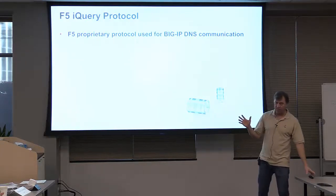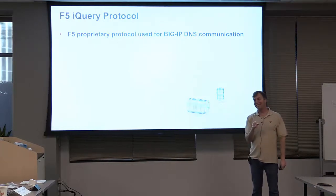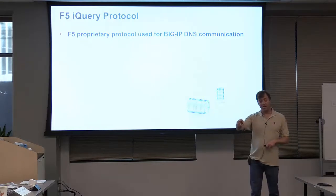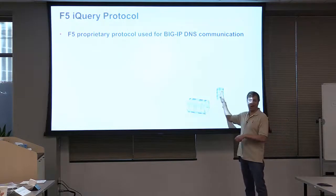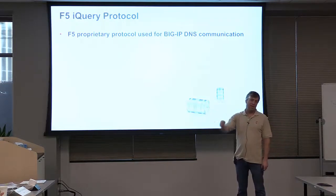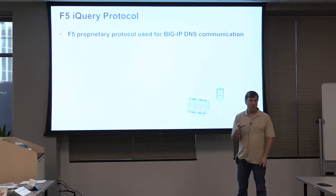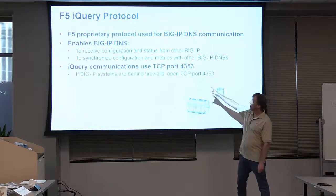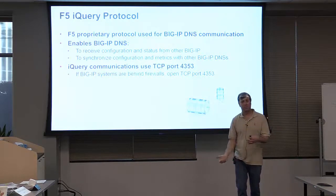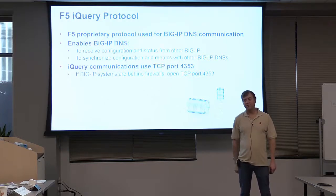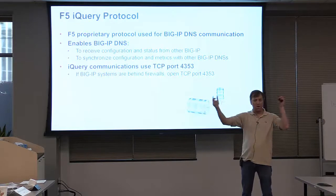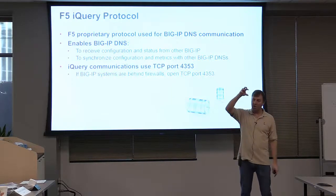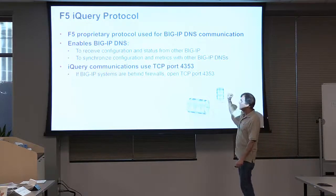iQuery has been around forever — it's an F5 standard used in other products as well. The original product was called 3DNS, and a developer joke to remember the port: DNS is port 53, and iQuery runs on port 4353. You need to know that for firewall rules, because GTM or DNS devices may be talking between data centers across a firewall, and you need to open that port. iQuery is encrypted, and you can run IQ dump to inspect the traffic.